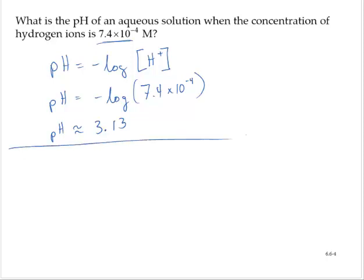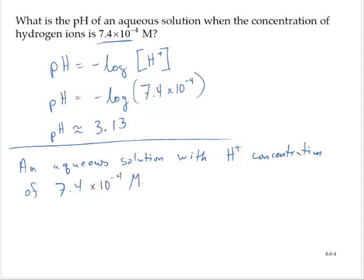So conclusion, an aqueous solution with hydrogen ion concentration of 7.4 times 10 to the negative fourth molarity has pH of 3.13.